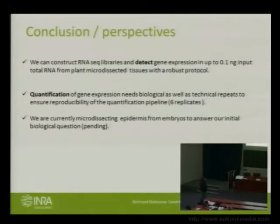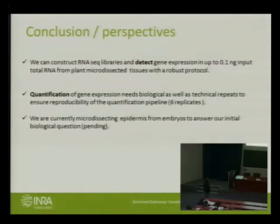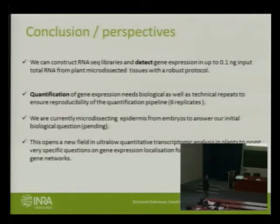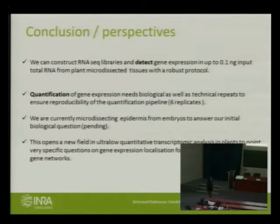We are currently micro-dissecting epidermis from embryos to answer our initial question and will soon be able to determine whether some genes are really differentially expressed in the epidermis during embryo maturation. For plants, this ultra-low quantification RNA-seq approach — perhaps standard in animal biology — has no mention in plant biology papers. It really opens the field for plant sciences, especially for modeling gene networks, as people want to decrease sample size to build more precise networks. Discriminating regions or sub-regions of the embryo increases the power of these approaches.